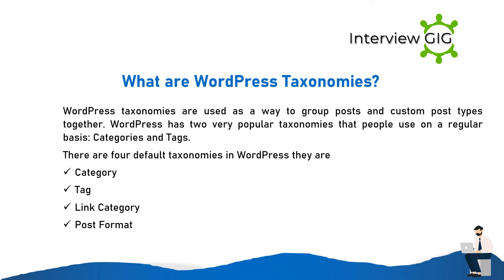What are WordPress taxonomies? WordPress taxonomies are used as a way to group posts and custom post types together. There are two very popular taxonomies that people use on a regular basis: categories and tags. There are four default taxonomies in WordPress: category, tag, link category, and post format.